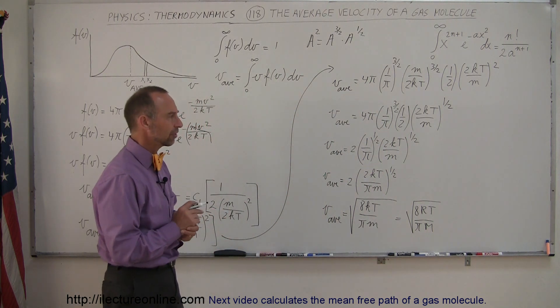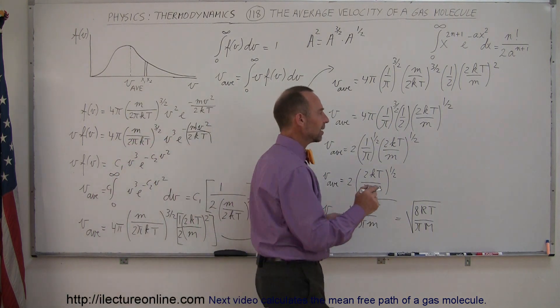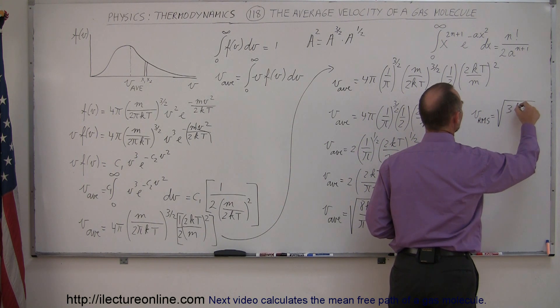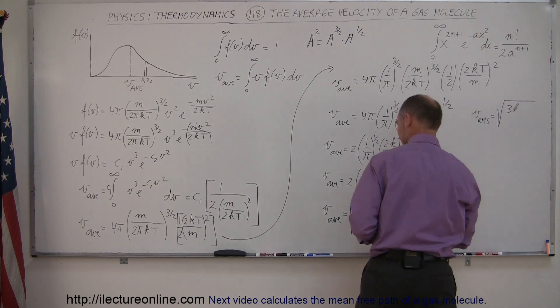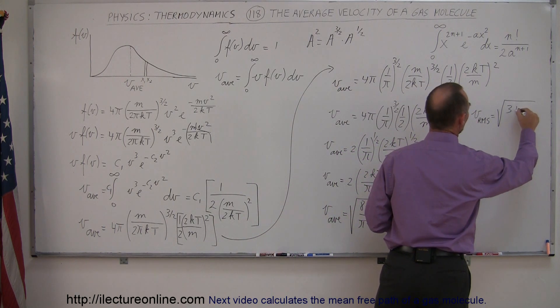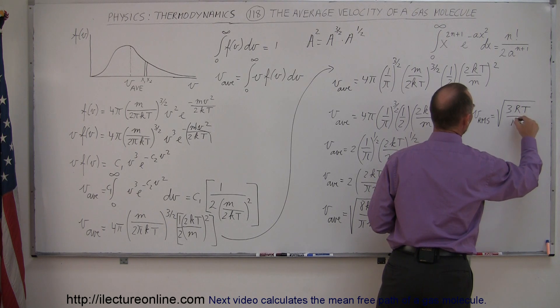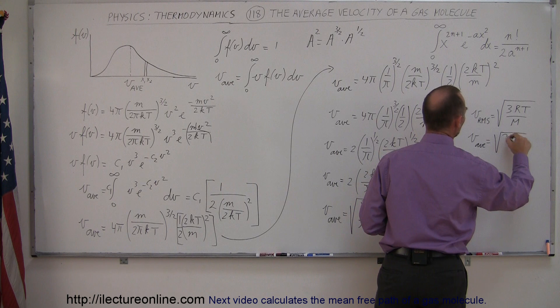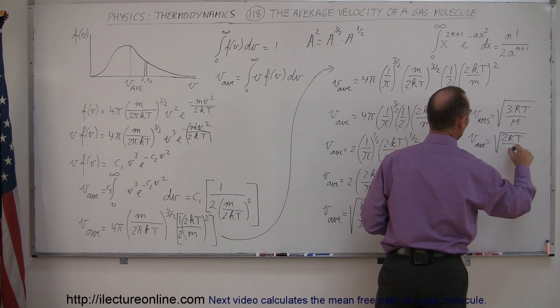Now, remember the two other velocities that we found before. We found the RMS velocity, V_RMS, to be equal to the square root of 3RT over the molar mass. We have the average velocity as the square root of 2RT over the molar mass. And now where does this one fall in?